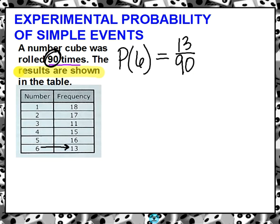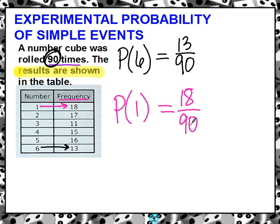In the same way, we could find the probability, the experimental probability of rolling a one. And the number one was rolled, and frequency just means how many times it happened, so the number one was rolled 18 times out of 90. So in that case, we could actually simplify. I believe we can divide both of those by nine. So we would get 18 divided by nine is two, and 90 divided by nine is 10. We can go one more here. We can divide by two again. So that would be one-fifth.